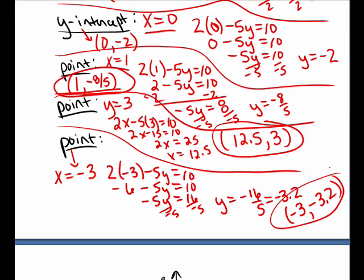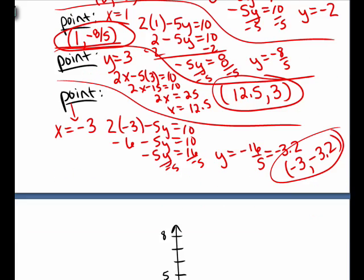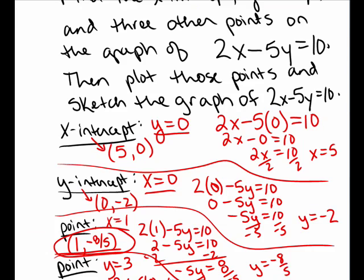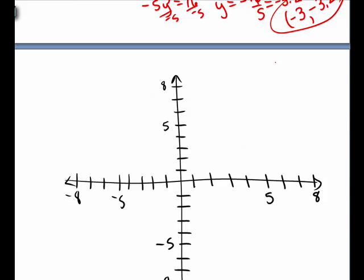Now I have the x intercept, the y intercept, and three other points on this graph. I'm going to go down and I'm going to plot these points. We have an x intercept of 5, 0.